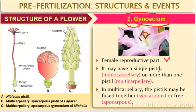The gynoecium may have a single pistil or more than one pistil. Monocarpellary means one carpel, one single pistil. Multi-carpellary means more than one pistil. In multi-carpellary gynoecium, the pistils may be fused together — that is called syncarpous — or free.